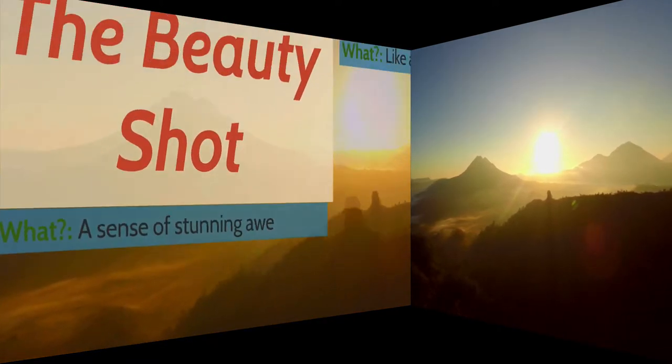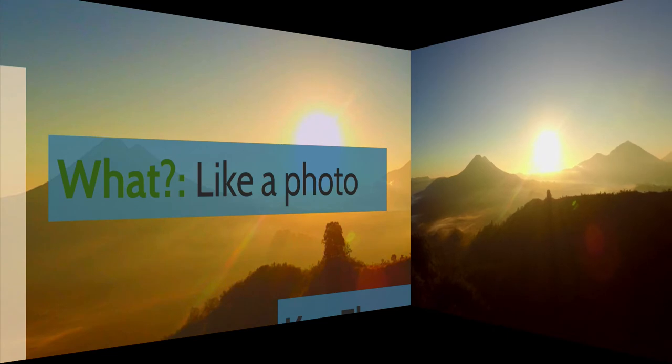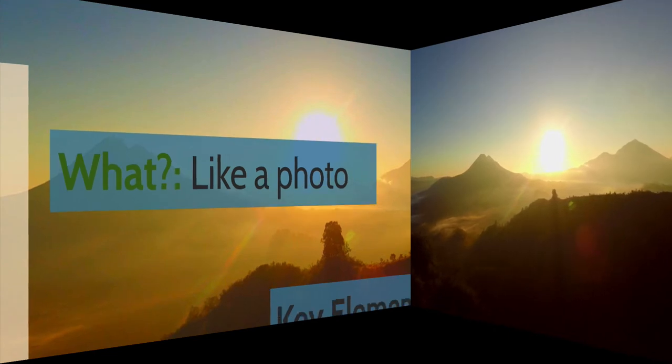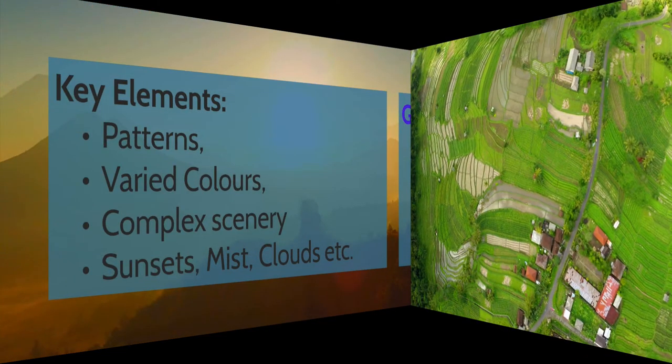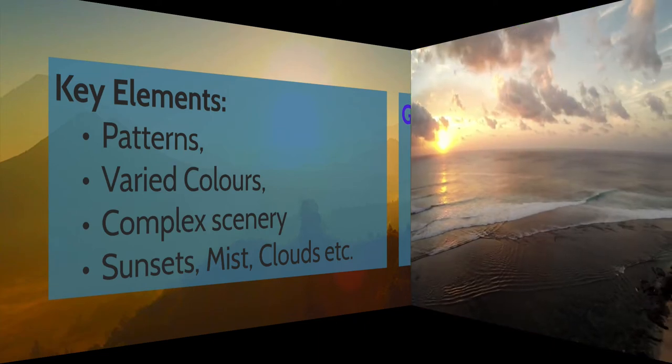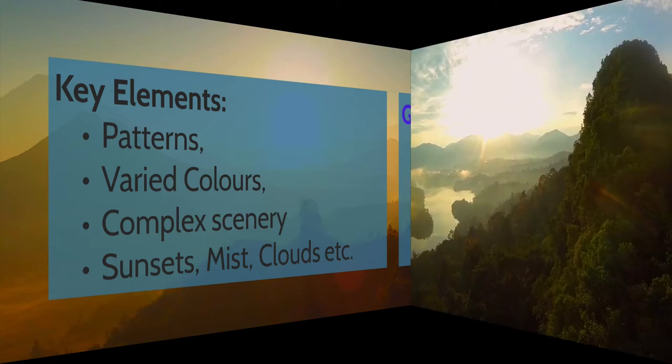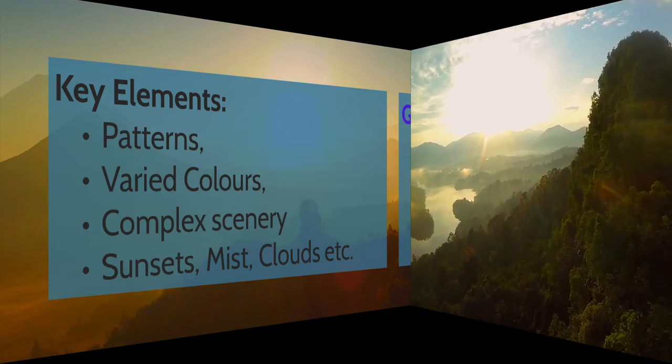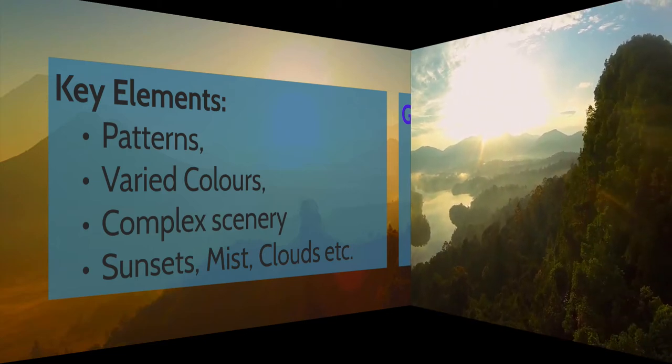The way to think about the beauty shot is it's pretty much like a photo. So how do we get a good photo? The kind of things that you're always looking for are interesting patterns in the landscape. Varied colors, complex scenery, sunsets, mists, clouds, puppies, maybe not puppies, but you get the idea.